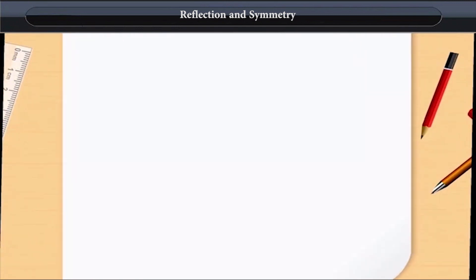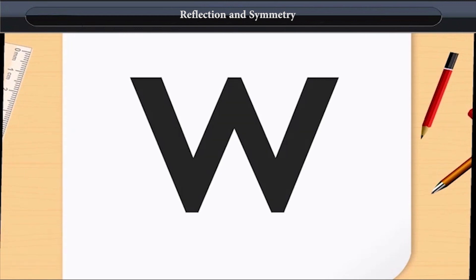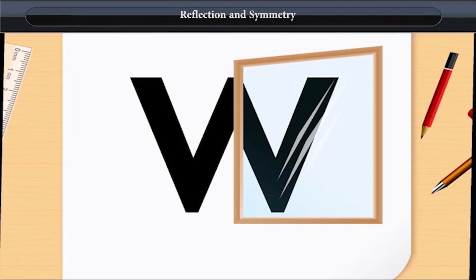Reflection and Symmetry. Line of Symmetry and Mirror Reflection are related to each other. Here is a picture showing the reflection of the English letter W.